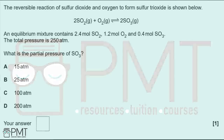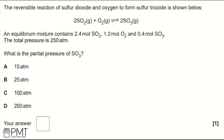The reversible reaction of SO₂ and O₂ forms SO₃. An equilibrium mixture contains 2.4 moles of SO₂, 1.2 moles of O₂, and 0.4 moles of SO₃. The total pressure is 250 atmospheres. What is the partial pressure of SO₃? Options: A: 15 atm, B: 25 atm, C: 100 atm, D: 200 atm.